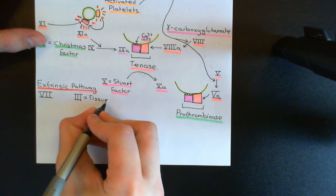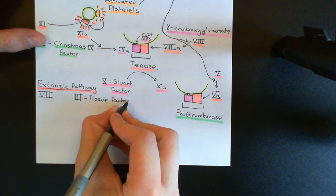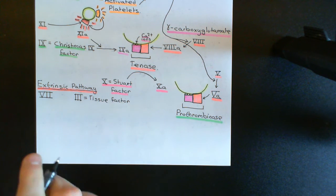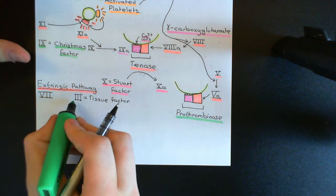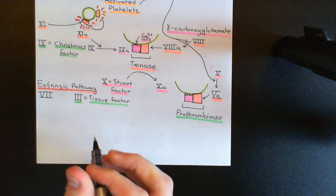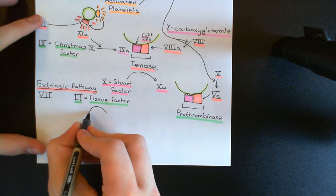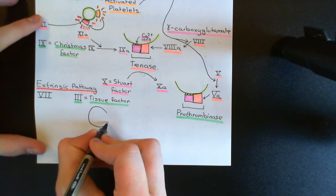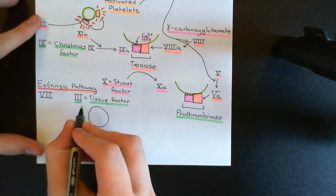Let me firstly just introduce you to coagulation factor 3, or tissue factor, and then we'll come back to coagulation factor 7, which is a more normal coagulation factor. So coagulation factor 3, as I say, this is produced by all cells all over the body. Loads of cells all over the body produce tissue factor.